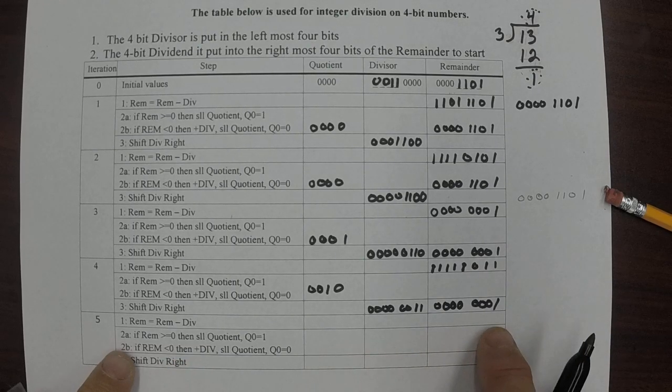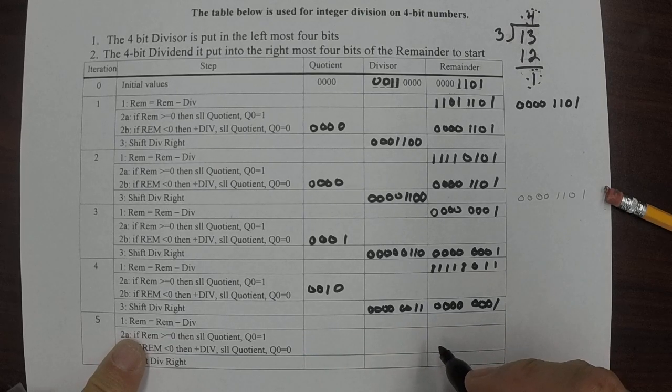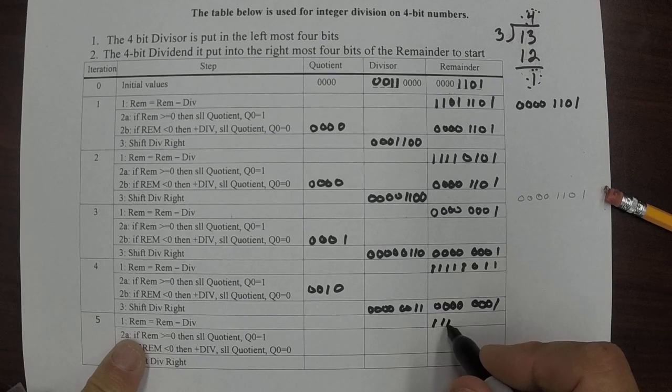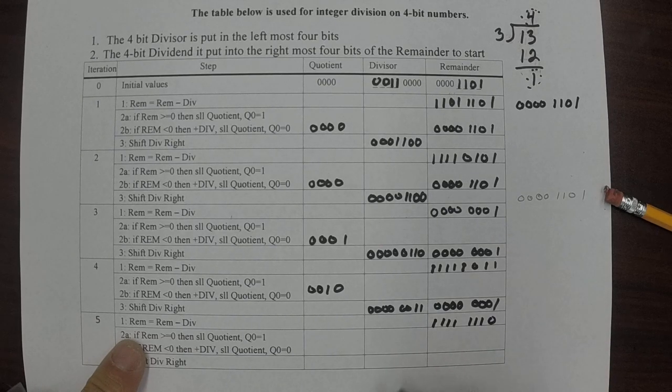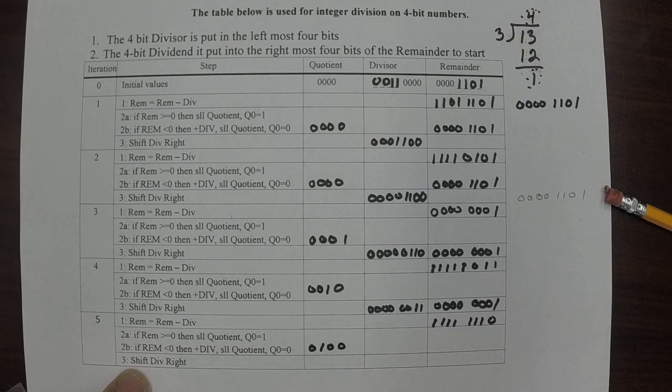One last time. I'm going to do this remainder. That answer turns out to be zero, one, zero, one, zero. It is less than zero. So I shift the quotient left and add a zero to the right. The remainder gets restored to what it was. Then I just shift the divisor right.